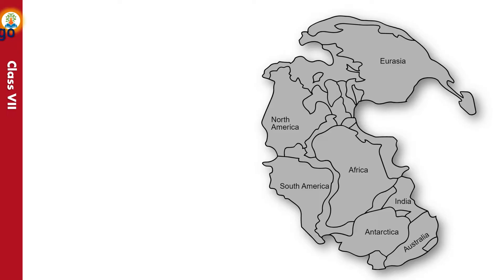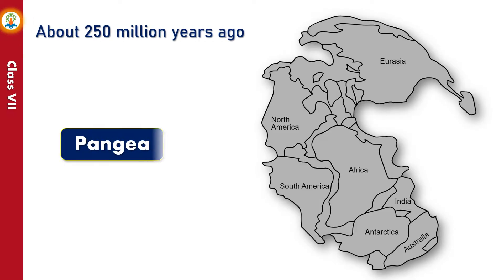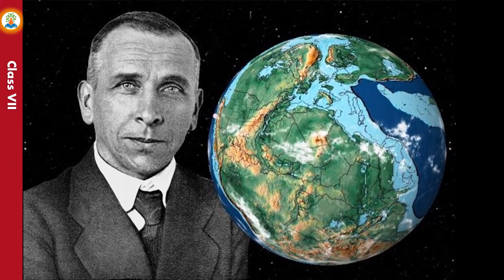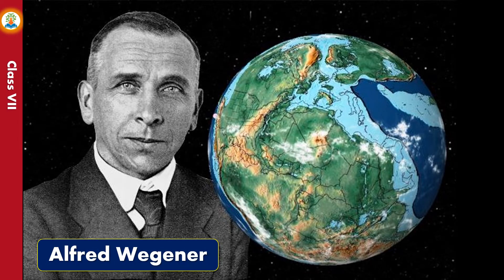About 250 million years ago, all the continents were joined together as a supercontinent known as Pangaea, set in a huge ocean called the Panthalassa. According to the theory of continental drift put forward by well-known geoscientist Alfred Wegener, the supercontinent Pangaea began to break up about 200 to 225 million years ago.